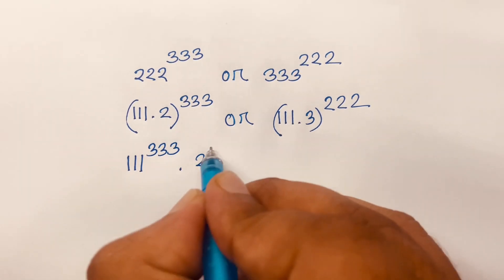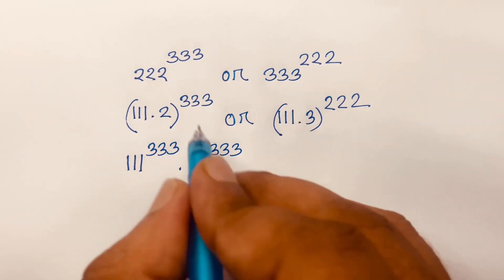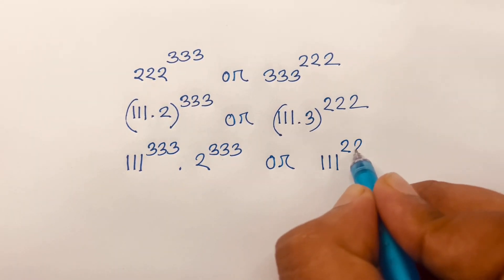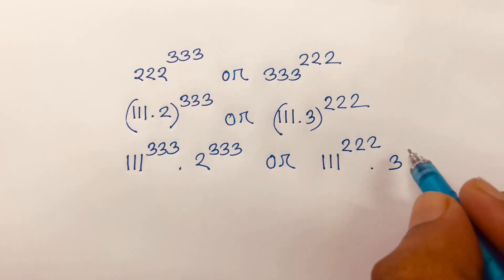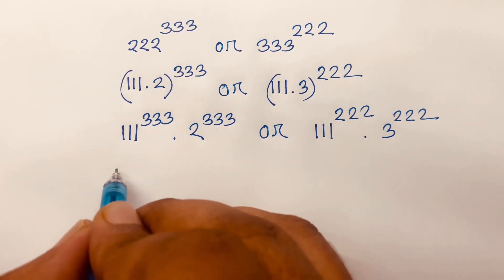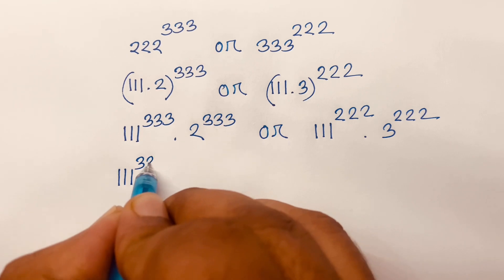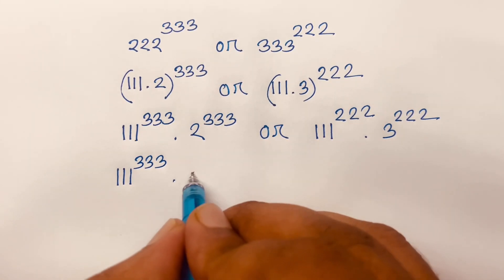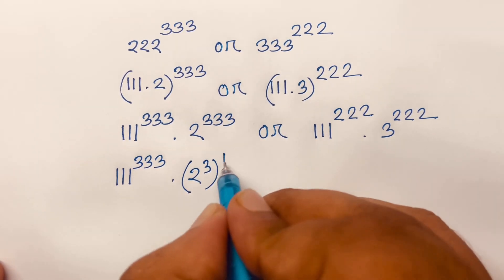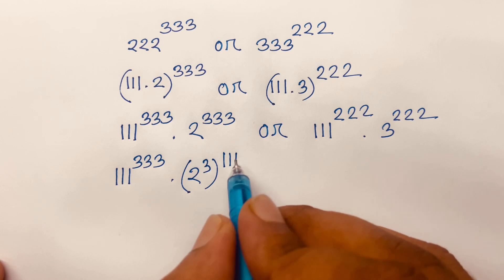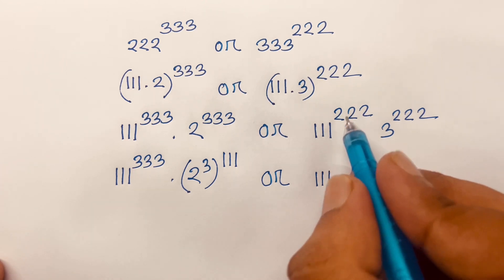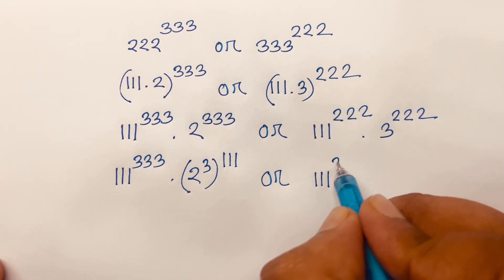Then I can say 111^333 times 2^333, and according to exponential rules, also 111^222 times 3^222. So we have 111^333 times 2^333 compared to 111^222 times 3^222.